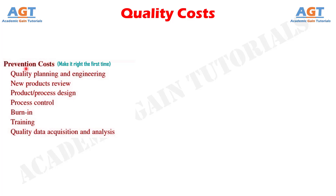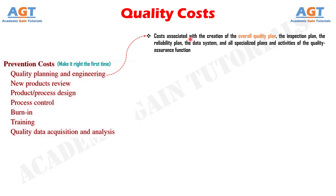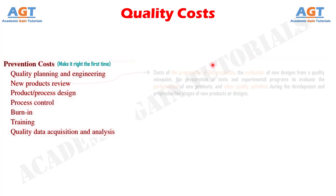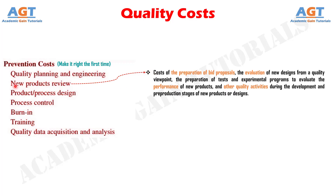The important subcategories of prevention costs include: Number 1, quality planning and engineering — costs associated with the creation of the overall quality plan, the inspection plan, the reliability plan, the data system, and all specialized plans and activities of the quality assurance function. Number 2, new products review — costs of the preparation of bid proposals, the evaluation of new designs from a quality viewpoint, the preparation of tests and experimental programs to evaluate the performance of new products, and other quality activities during the development and pre-production stages of new products or designs.